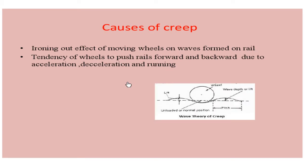Coming to causes of creep: the ironing out effect of a moving wheel on waves formed on the rail, and the tendency of the wheel to push the rail forward and backward due to acceleration, deceleration, and running. The causes of creep are explained on the basis of three theories: the wave theory, the percussion theory, and the drag theory. The wave theory says that whenever a wheel is moving on a track, where the wheel is loaded, a depression will be formed and the nearby ends will have a lift or bulge. Whenever the moving train continuously moves, this wave action is formed throughout, causing a longitudinal movement in the rail.